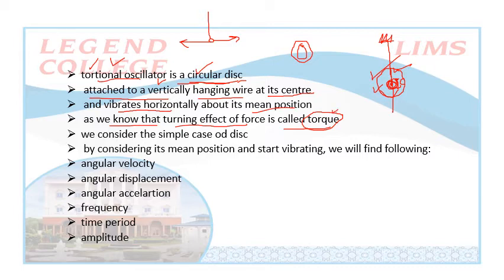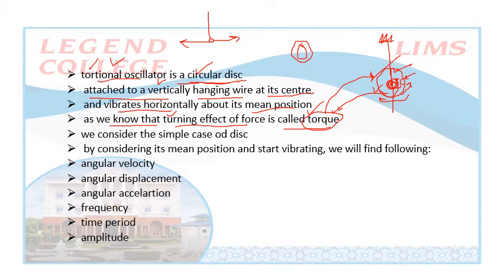The turning effect of force — when a small force is applied, it turns the disk in a circular way and then it returns to its original mean position, moving toward the extreme position. This turning effect produces torque. Due to this torque, the disk provides the turn. Today's topic: first we will consider the simple case of the disk. We will consider the mean position and the extreme position, and study the vibration about the mean position. From this vibration we will find the angular velocity, angular displacement, angular acceleration, frequency, time period, and amplitude.